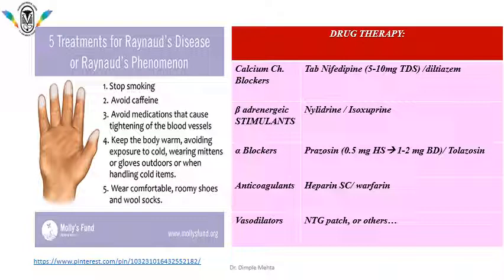For vasospastic peripheral vascular disease — Raynaud's phenomenon — pharmacological treatment includes beta-adrenergic stimulants like isoxsuprine or niludipine, alpha blockers like prazosin or tolazoline. If giving prazosin, start with a lesser dose at night and gradually increase up to 1–2 mg twice a day to avoid first dose effect of orthostatic hypotension. Anticoagulants — heparin subcutaneously or warfarin orally — can be given. Vasodilators like nitroglycerin patch can also be considered. So that was all about peripheral vascular disorders. Angina and MI can be asked as long questions.